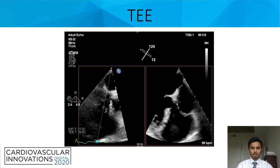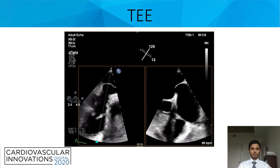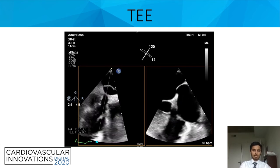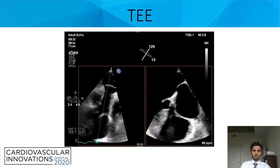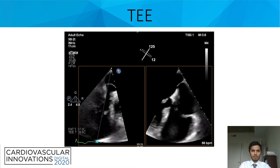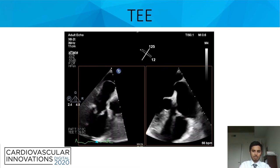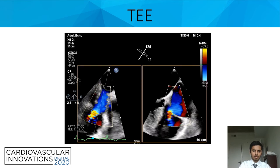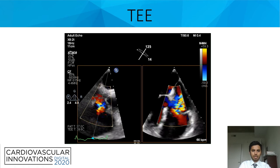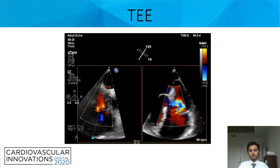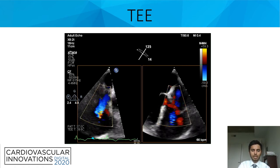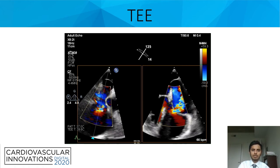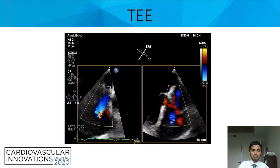Now let's take a look at some images. On this TEE, we can see significantly thickened tricuspid leaflets with poor coaptation and dilated right-sided chambers. The images here illustrate severe tricuspid regurgitation secondary to poor leaflet coaptation, and thickening of the pulmonic valve leaflets with moderate pulmonic insufficiency.